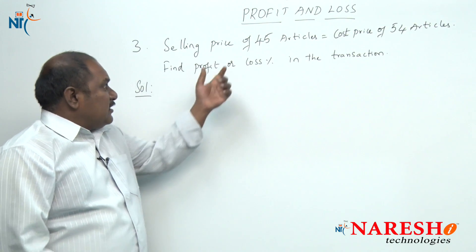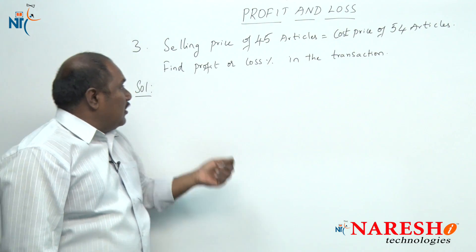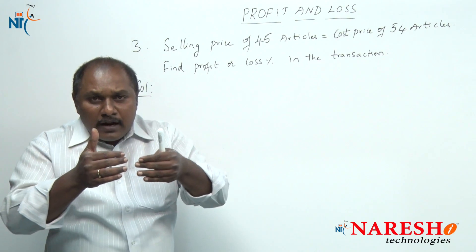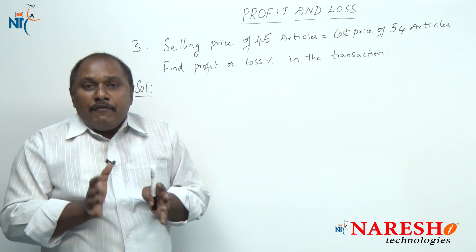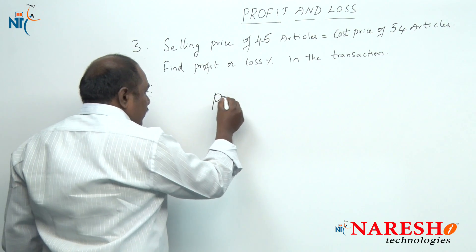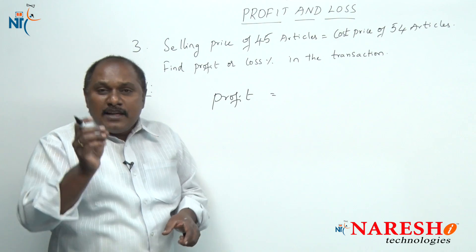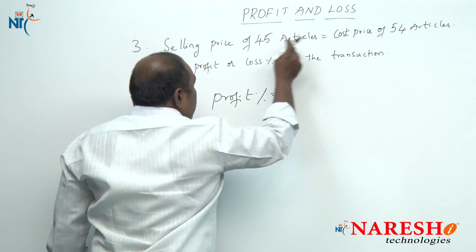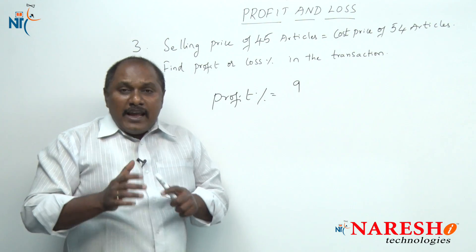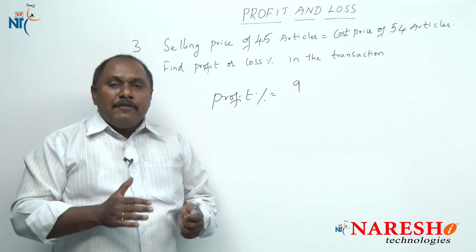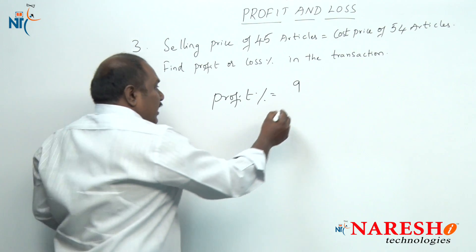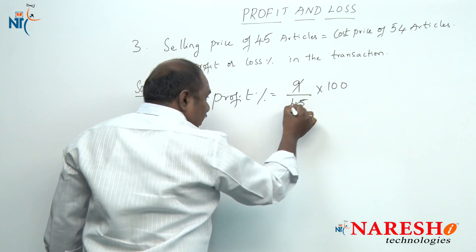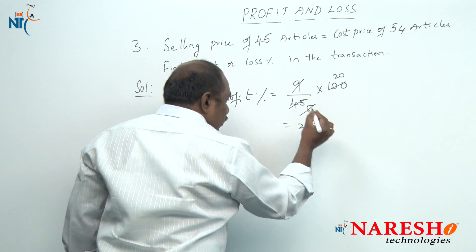Third problem: the selling price of 45 articles is equal to the cost price of 54 articles. Find profit or loss percent in the transaction. You are purchasing 54 articles, and to get back the same money you are giving only 45 articles — so there is a profit. Profit = 54 − 45 = 9 articles. Profit percentage with respect to quantity sold: 9 / 45 × 100 = 20. There is a profit of 20 percent.